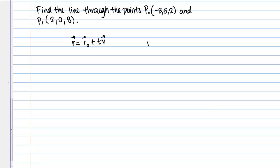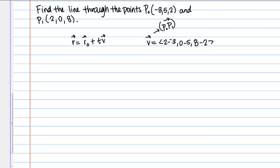Let's start by finding vector V. Vector V then is going to be the vector that goes between points P₀ and P₁. If I work that out just using the points P₁ and P₀, the components of that vector are going to be 2 minus -3, 0 minus 5, and then 8 minus 2. If I work that out, that's going to give me <5, -5, 6> as the components of my vector V.